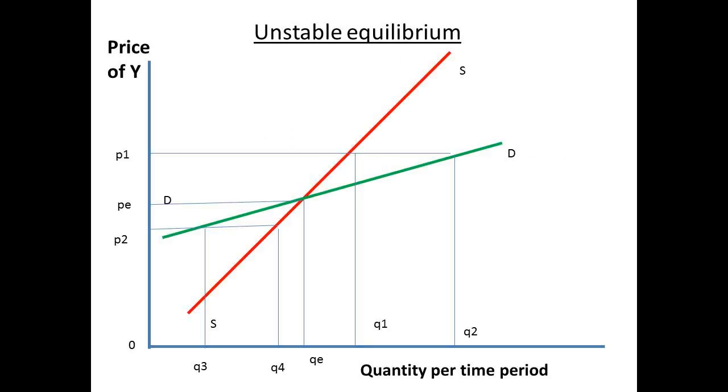Now consider this diagram for the price of good Y. You have probably already guessed that we are considering a Giffen or Veblen good here. PE is the equilibrium price where demand and quantity supplied are the same. What happens when the price rises to P1? The quantity demanded now exceeds the supply. Q2 is greater than Q1. This pushes the price even higher, creating even higher demand. We say that we have a disequilibrium situation.